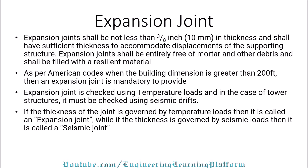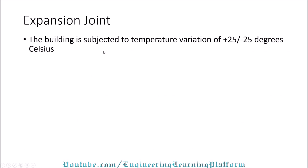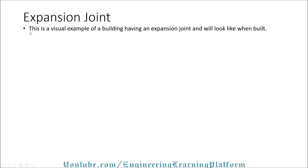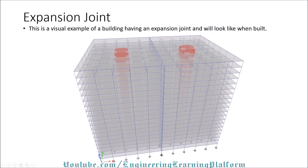If the thickness of joint is governed by temperature loads then it is called an expansion joint, while if the thickness is governed by seismic loads then it is called a seismic joint. In the next video we'll discuss how to calculate the expansion joint or the seismic joint thickness, but in this video we'll cover only how to calculate thickness of expansion joint. The building is subjected to temperature variation of plus or minus 25 degrees Celsius. When there is a need of expansion or seismic joint, the buildings are modeled as separate models if there is no common podium structure. This is a visual example of a building having an expansion joint — you can clearly see the minimum separation between the buildings.